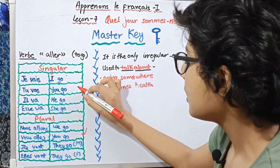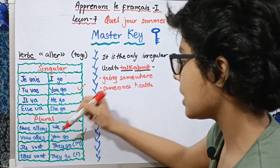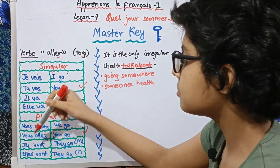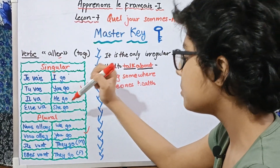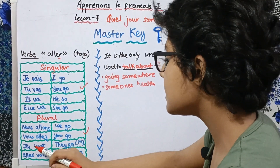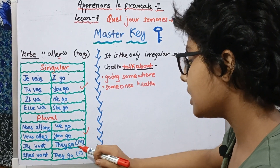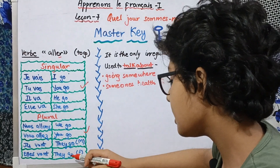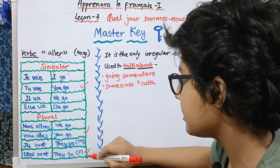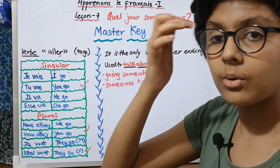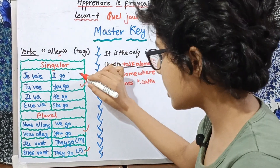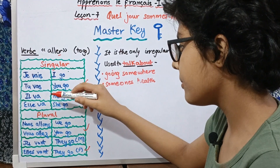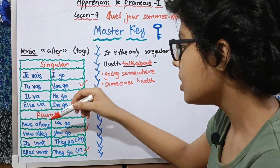For the plural: nous allons means 'we go,' vous allez means 'you go' — but this is in the plural form, so tu vas and vous allez both mean 'you go,' the difference being that tu vas is singular and vous allez is plural. Then ils vont means 'they go' in the masculine, and elles vont also means 'they go' but in the feminine.